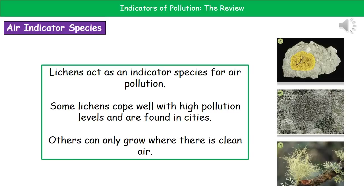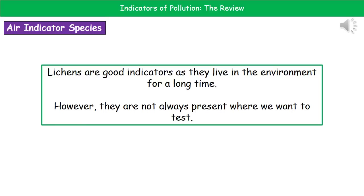Where seagulls line up and wait for you to drop your food at break and lunch, there are obviously a lot of bird droppings, which are very rich in nitrogen. So we get that yellow lichen growing because it's nitrogen rich. Lichens are such good indicators because they live in the environment for a long time. However, one downside is that they're not always present where we actually want to test the air quality.